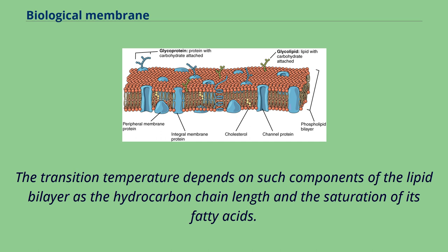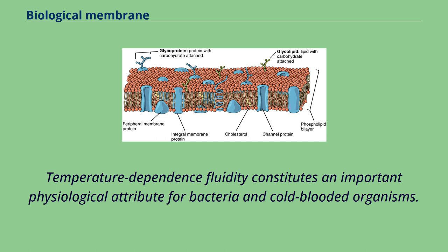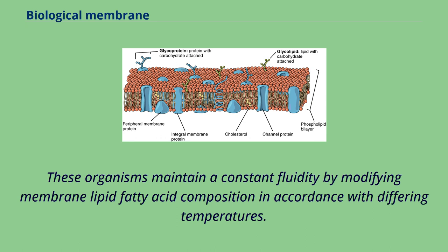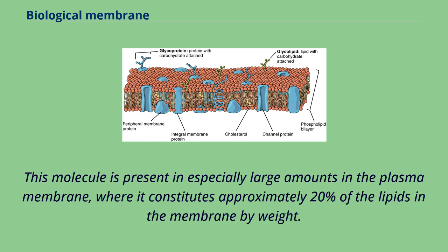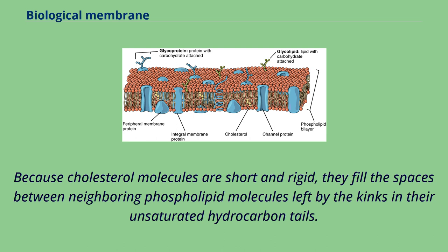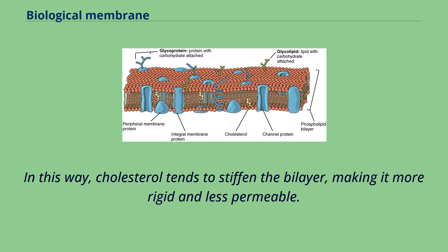Below a transition temperature, a lipid bilayer loses fluidity when the highly mobile lipids exhibit less movement, becoming a gel-like solid. The transition temperature depends on the hydrocarbon chain length and the saturation of its fatty acids. Temperature-dependent fluidity constitutes an important physiological attribute for bacteria and cold-blooded organisms, which maintain constant fluidity by modifying membrane lipid fatty acid composition in accordance with differing temperatures. In animal cells, membrane fluidity is modulated by the inclusion of cholesterol, which constitutes approximately 20% of the lipids in the plasma membrane by weight. Because cholesterol molecules are short and rigid, they fill the spaces between neighboring phospholipid molecules, tending to stiffen the bilayer and make it more rigid and less permeable.